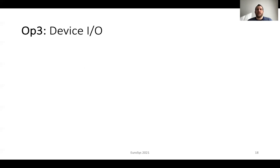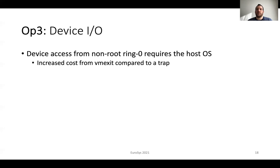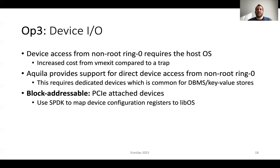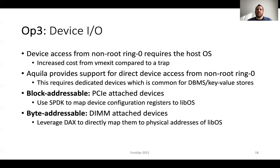The third operation is related to device IO. The challenge here is that device access from non-root ring 0 requires the host operating system and results in increased cost due to VM exits. To overcome this limitation, Akila provides support for direct device access from non-root ring 0. This requires dedicated devices, which is common today for database management systems and key-value stores. Block addressable fast storage devices are mainly PCIe attached; Akila uses SPDK to map the device configuration registers directly to our library operating system. Byte addressable storage devices are mainly DIMM attached; in Akila we leverage DAX and map them to the physical address space of our library operating system. Akila supports both block and byte addressable storage devices and bypasses entirely the host operating system.